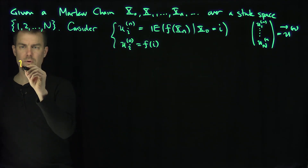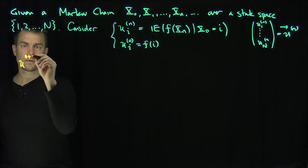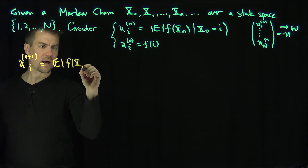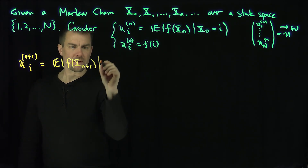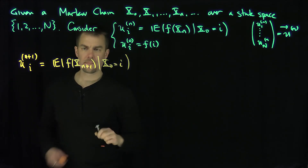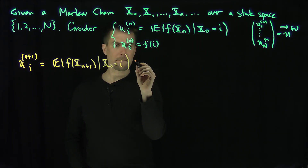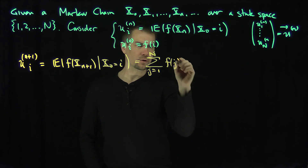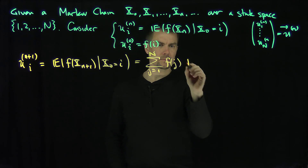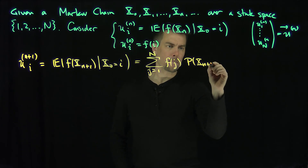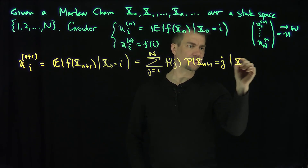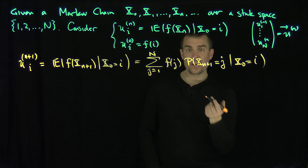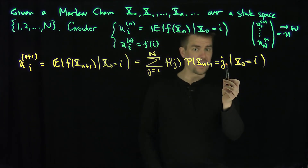If I look at u_{n+1, i}, what is this? This is just the expected value of f of x_{n+1}, given that x0 is equal to i. So what is this? This is just the sum over j from 1 up to n of f(j) times the probability that x_{n+1} is equal to j, given that x0 is equal to i. That's how we compute conditional expected values.